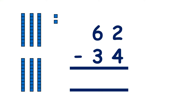We have 62 minus 34, and we're using column subtraction, so we have 34 written underneath 62. With column subtraction, we always start with the smallest place value — we start with the units.